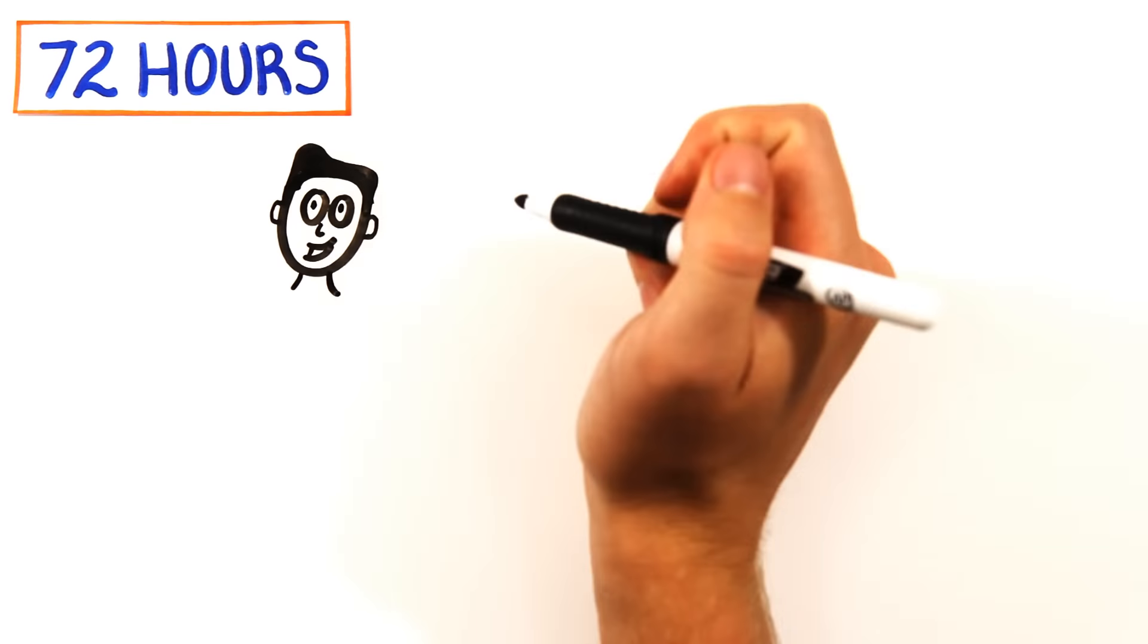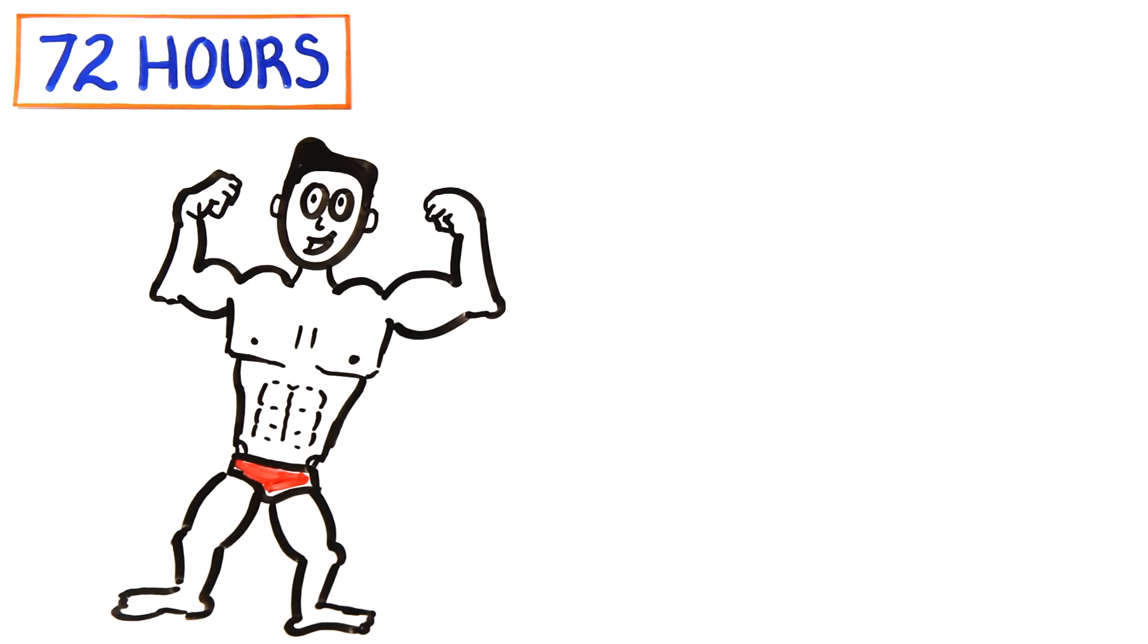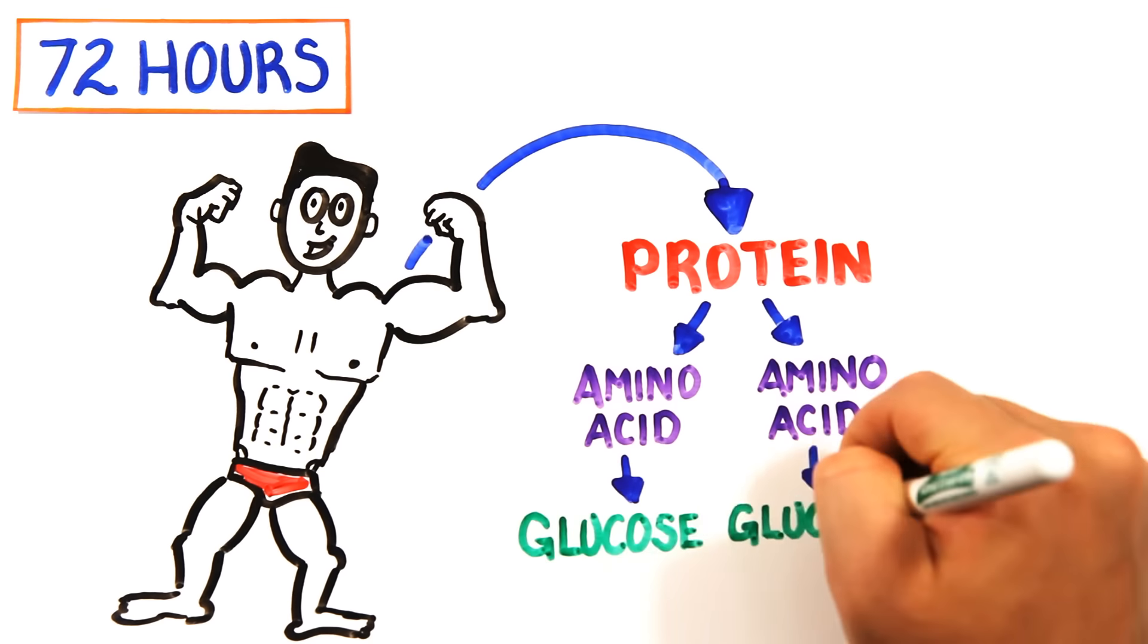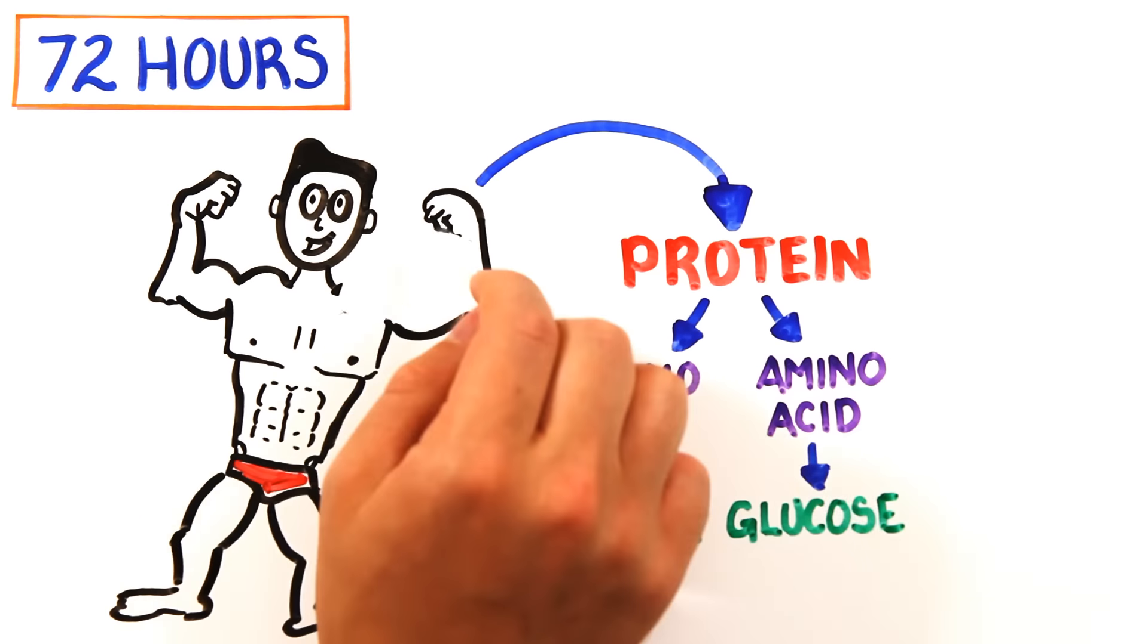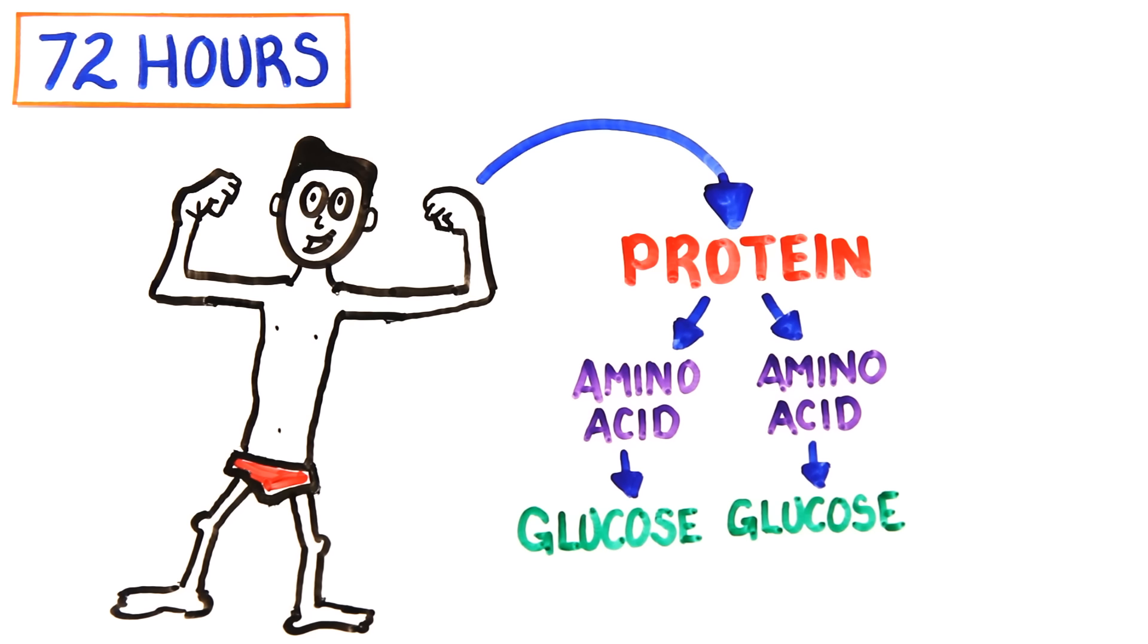However, beyond 72 hours, not only will your mood and energy suffer, but your brain will start to break down your body's own protein. The proteins release amino acids which can be converted into glucose, which is great news for your brain, but bad news for your body. Basically, your body is cannibalizing itself by destroying your muscle mass.